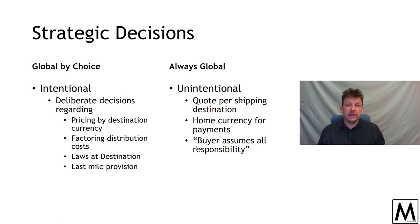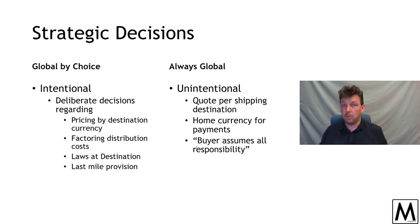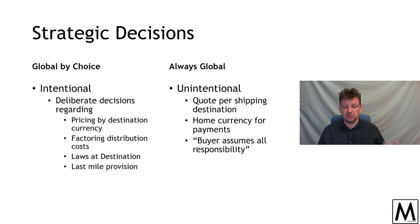Unintentional global is often signaled by PayPal as the only transaction method, quotes on a per-shipping basis, everything paid in the home currency of the provider, and the buyer assuming all responsibility for insurance, legality, port fees, extra taxes, and import duties. The biggest tell is there's only one shipping option, and that shipping option is more expensive than the product itself — which has been the curse of buying things on the internet since 1996. With an intentional global strategy, you'd look at how to ensure your total price concept — the total value and total cost of your offer — matches up, knowing you're going to need to ship something across the ocean for potentially months.